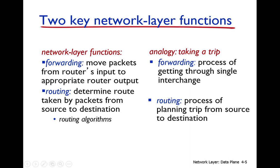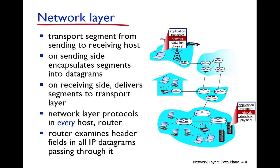There are two key network layer functionalities. First, routing: the network layer must determine the route taken by a packet from source to destination, computed using a routing algorithm. Second, forwarding: once the route is computed, the packet is forwarded from the router's input to the appropriate router output, moving hop by hop from source to destination.